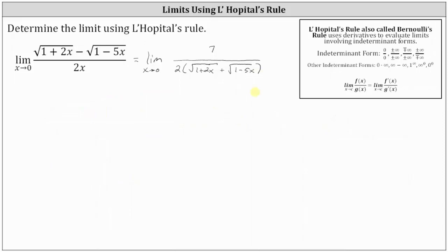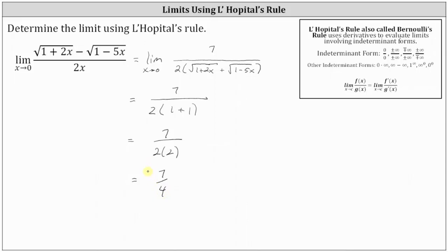Now we can determine the limit by performing direct substitution. We have seven divided by two times the quantity square root of one plus square root of one, which is one plus one, giving us seven divided by the product of two and two, which gives the same result of seven fourths. So we first showed how to find the limit using L'Hôpital's rule, and then how to find it by rationalizing the numerator. I hope you found this helpful.